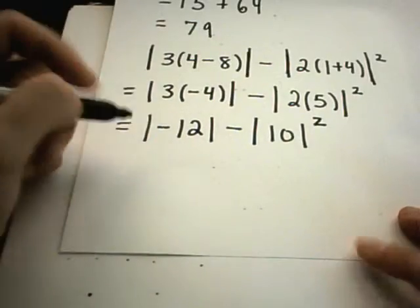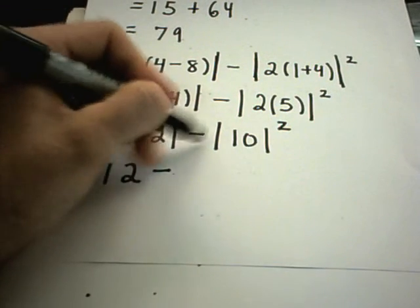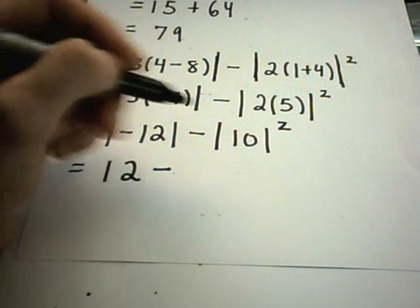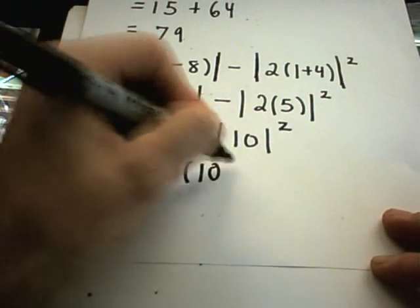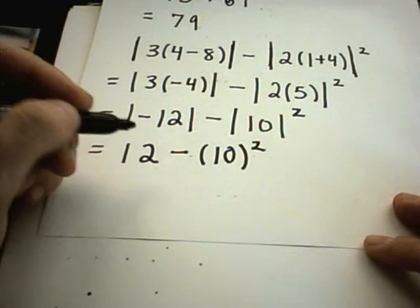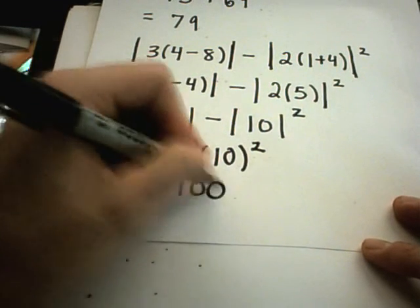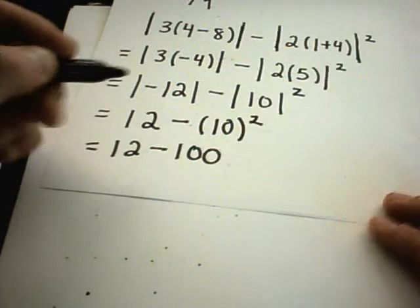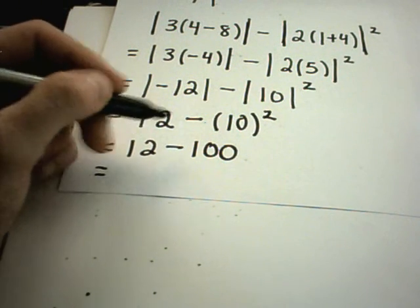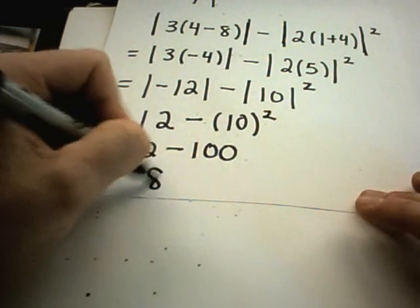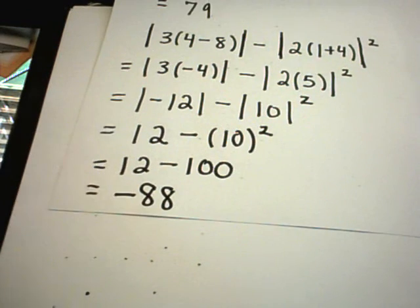The absolute value of negative 12 is just plain old positive 12. The minus sign is not inside the absolute value. So we'll leave that alone. And the absolute value of 10 is just 10. I still have to square that though. So 10 times 10 is 100. And now I get 12 minus 100. What is that? I think about it as being 100 minus 12, which is 88. But since it's 12 minus 100, I'll get negative 88 as my solution.